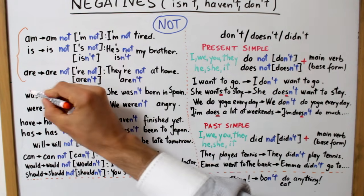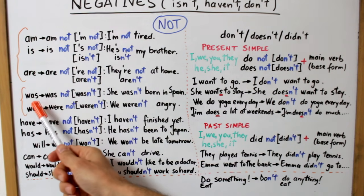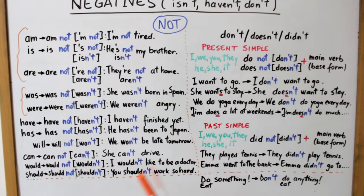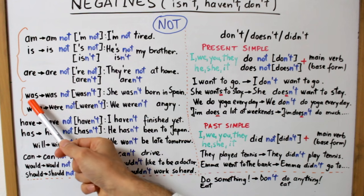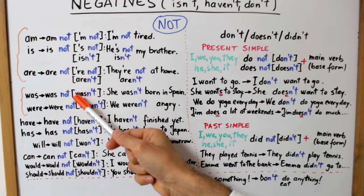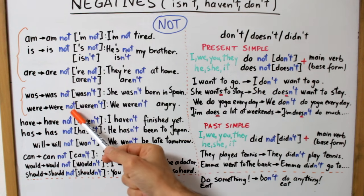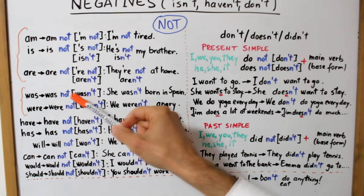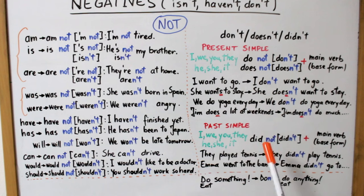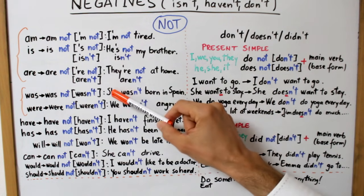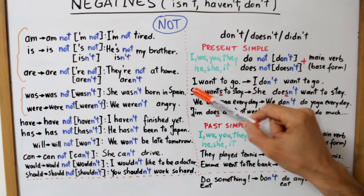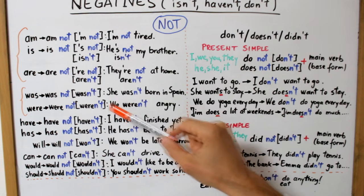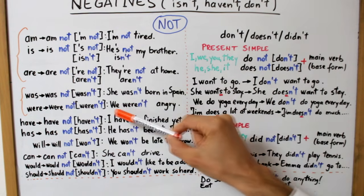Apoi avem verbul TO BE dar la trecut. Unde are două forme la afirmativ și anume WAS pentru persoana întâi și a treia singular deci pentru eu, el sau ea respectiv WERE pentru celelalte persoane. Din nou la negativ adăugăm pur și simplu NOT iar formele negative sunt WAS NOT cu forma scurtată WASN'T respectiv WERE NOT care prescurtat devine WEREN'T. Două exemple: Ea nu a fost născută în Spania. She wasn't born in Spain. Ea nu s-a născut în Spania. Sau Noi nu am fost nervoși. We weren't angry. We weren't angry. Noi n-am fost nervoși sau n-am fost supărați.